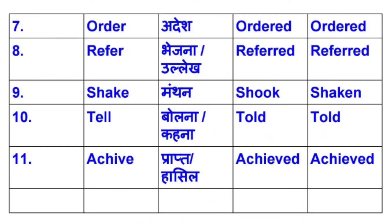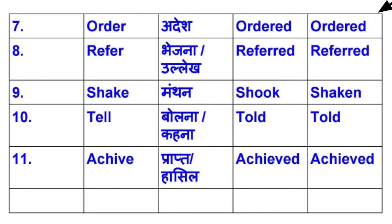Next है ORDER — O-R-D-E-R. Order का हिंदी meaning होता है आज्ञा, आदेश। इसका V2 हो जाएगा Ordered — O-R-D-E-R-E-D, और V3 भी Ordered होगा।